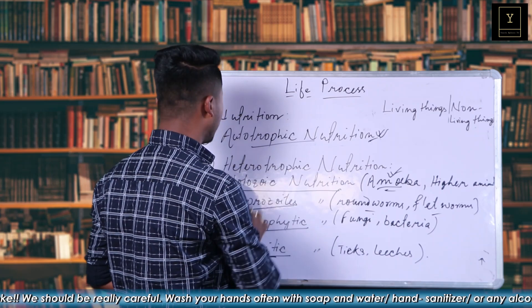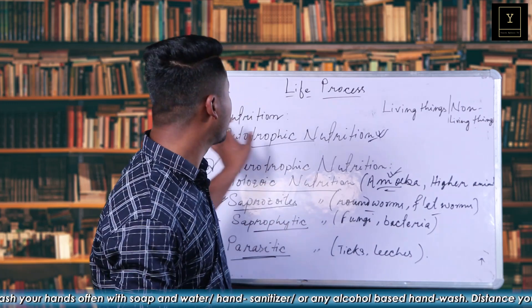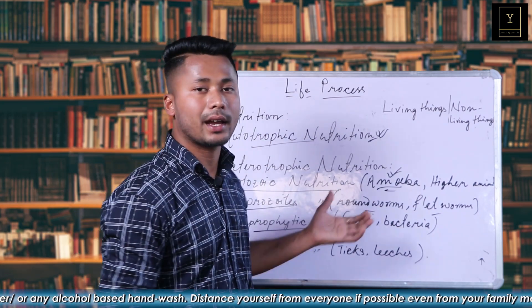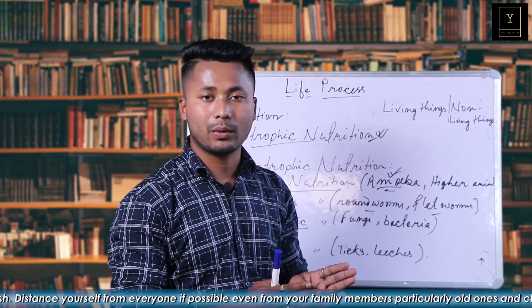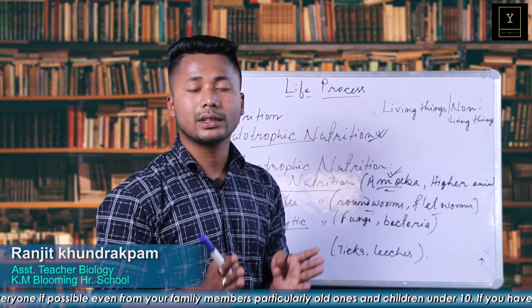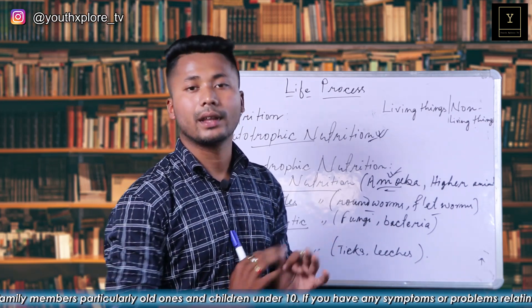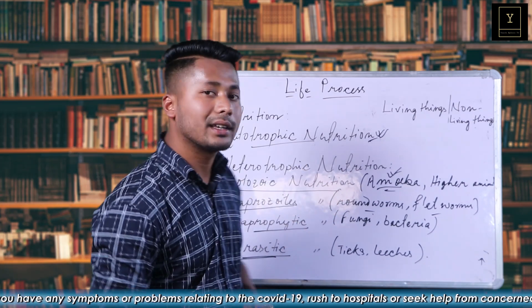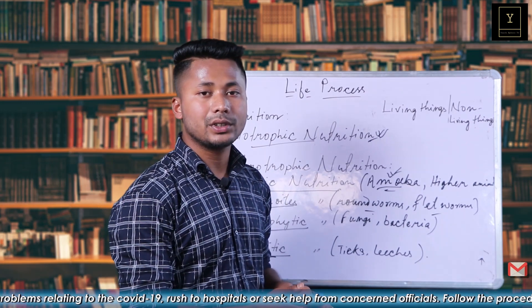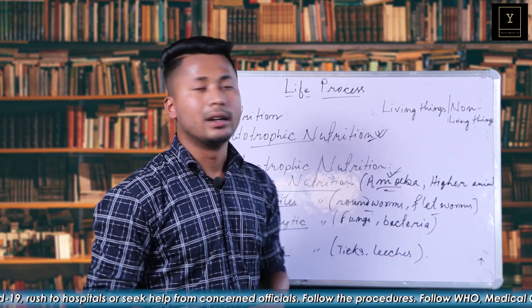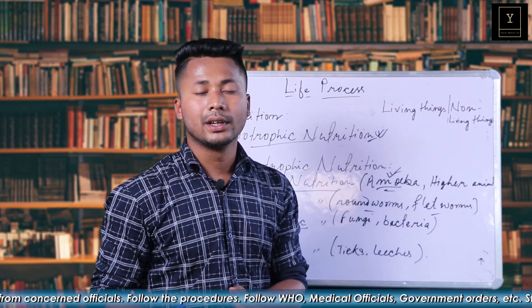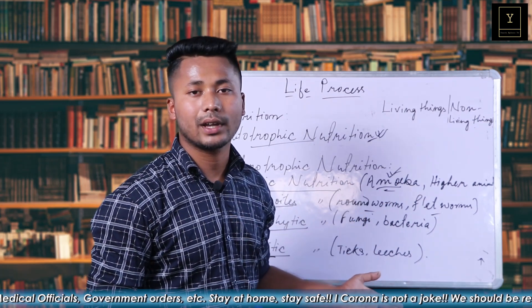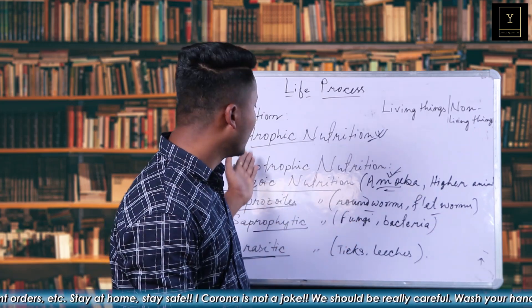Autotrophic nutrition and heterotrophic nutrition — nutrition is very important. We have to ask ourselves what our life processes are. We have to ask how to take in energy in the form of food — it is called nutrition. Life processes also include excretion and transportation. Heterotrophic nutrition types include saprotrophic, saprophytic, and parasitic. You can define heterotrophic nutrition and explain its types for 5 marks.